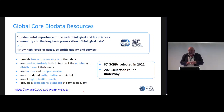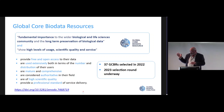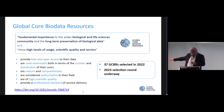We had a panel of expert external reviewers and a two-stage process. At the end of that we ended up with 37 different what we call Global Core Biodata Resources, spanning many different types of data resource — one example being GBIF.